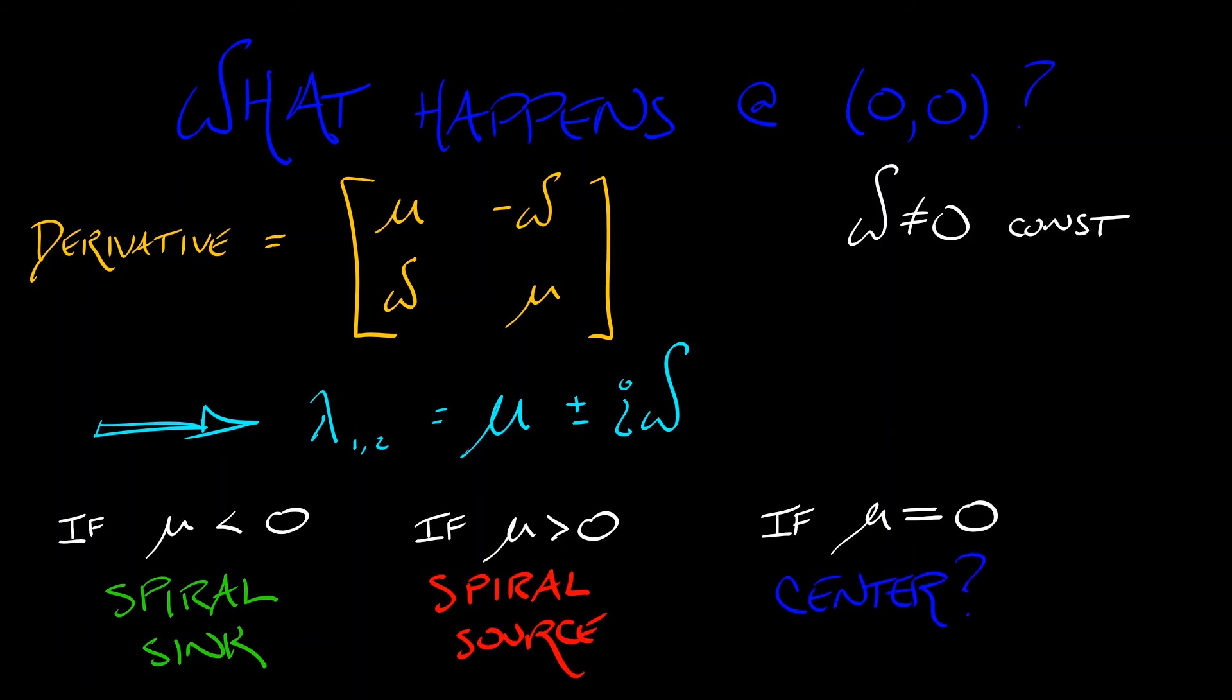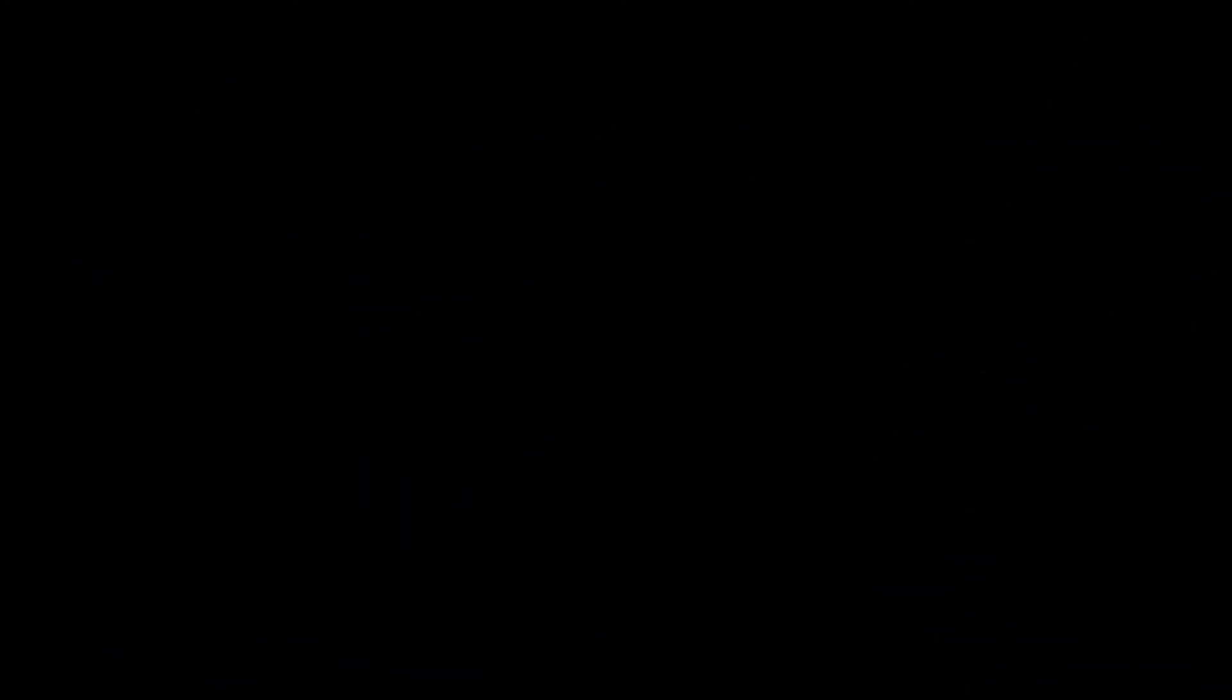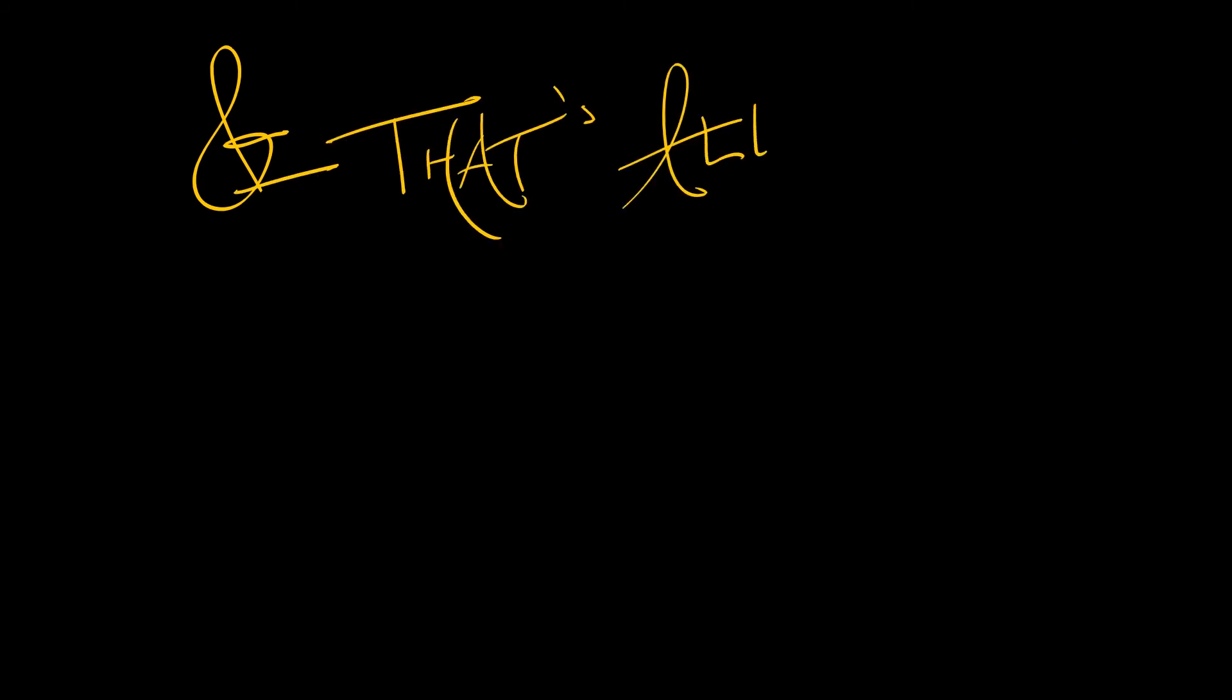But is it? Recall the Hartman-Grobman theorem says, not so sure about that. In fact, because as mu passes through zero, we're changing the type of equilibrium, going between a spiral sink and a spiral source. We've got a bifurcation here. Now, it's kind of an unusual bifurcation. You're not changing the number of equilibria. You're going from one to one. You're just changing the type of equilibria. And that's it. That's all that's happening.